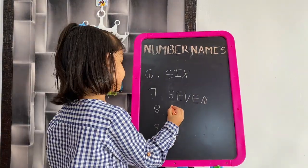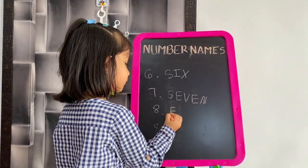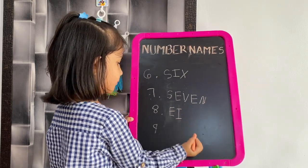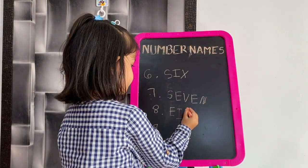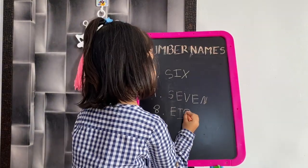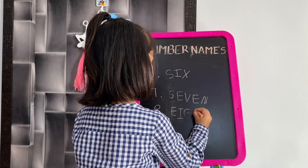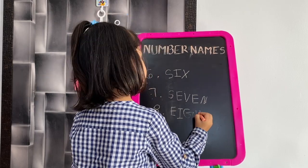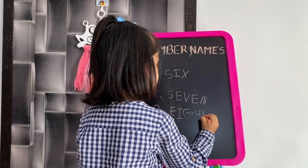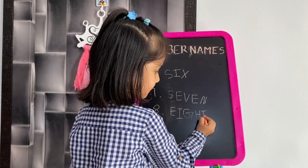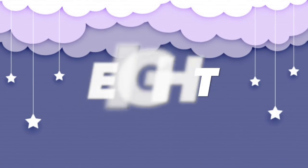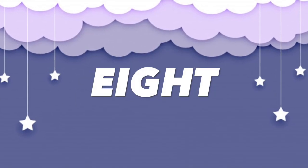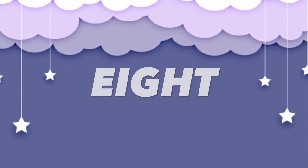Now I will write 8. E, I, G, H, T. 8. E, I, G, H, T. 8.